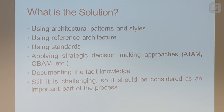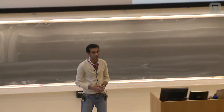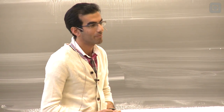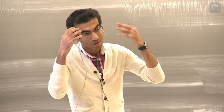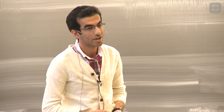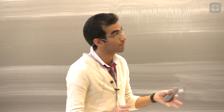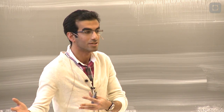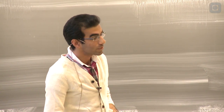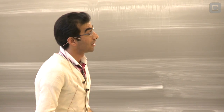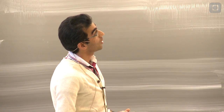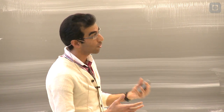Another important thing — which even industry often neglects — is to document the tacit knowledge. When you have different stakeholders and make decisions, the decisions are made but they are not documented. They remain only in the architect's mind, and if that architect leaves the company, everything is lost. It is really important to document the decision-making process and the rationale behind the decisions. But even if you do all of these things, it is still a challenge and you should always be careful about it.